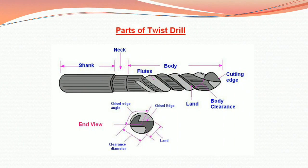Now the parts of a twist drill. There is a picture of the twist drill showing the parts: shank, neck, flutes, body, cutting edge, body clearance, and length. The end view shows the clearance diameter, chisel edge angle, chisel edge, and length.